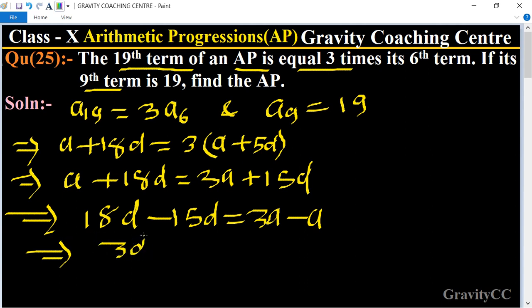So the value of d equals 2a by 3. Now putting a₉ equals 19, means a plus 8d equals 19.